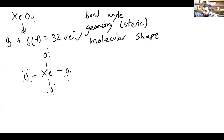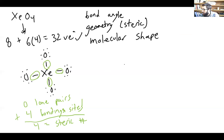This is the correct Lewis structure, but we need the bond angle, geometry, and the shape. So what's our steric number? Our steric number is simply the number of bonding sites plus the number of lone pairs around the central atom. We have zero lone pairs on the central atom but we have four bonding sites, so we add those up and we're going to get four equals our steric number.